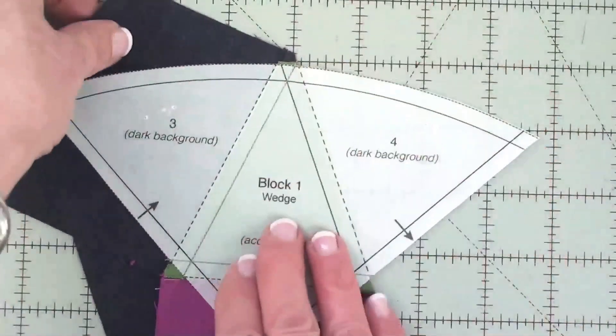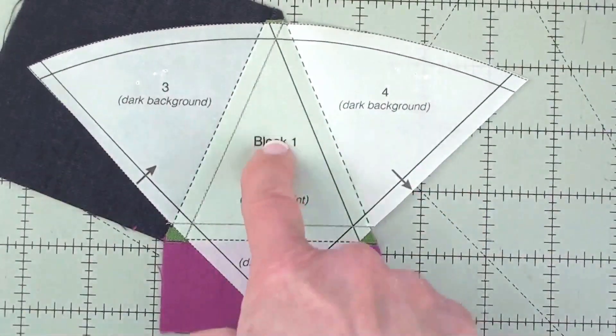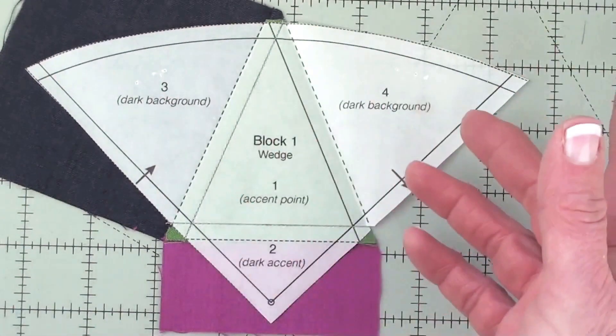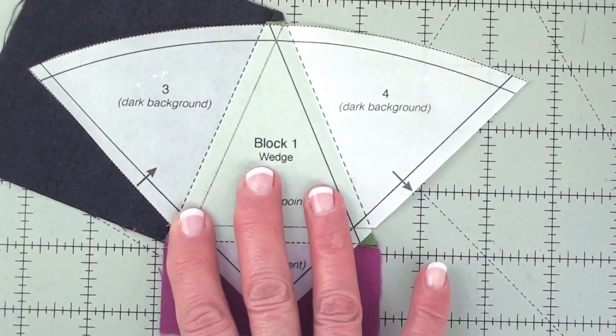That's how you handle a shape that has number one in the center. All you have to do is follow the piecing sequence and you'll be just fine.